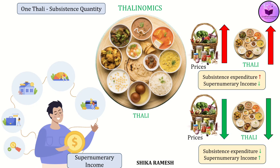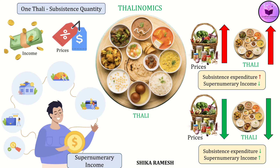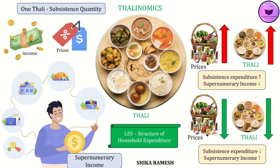Linear expenditure systems provides the theoretical foundation for what Thalinomics measures in practice. It shows us not only how affordable the minimum plate of food is, but also how changes in income or prices affect households' food consumption after covering the bare minimum. In short, LES explains the structure of household expenditure, and Thalinomics gives us a real-world snapshot of one of the most essential categories — food.